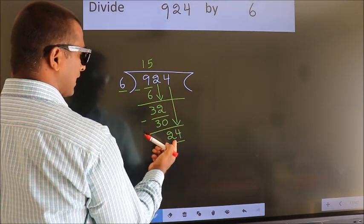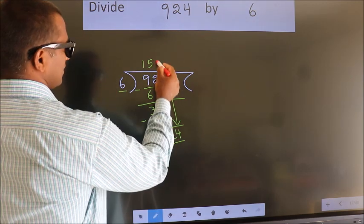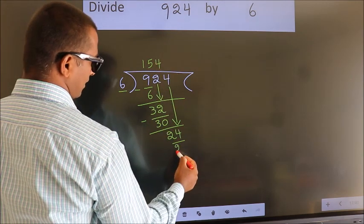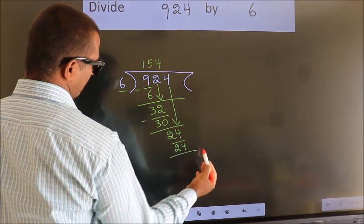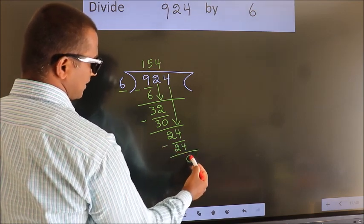When do we get 24? In 6 table, 6 4s 24. Now we subtract. We get 0.